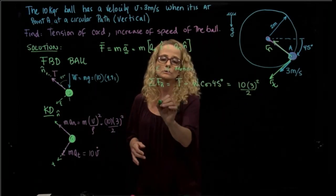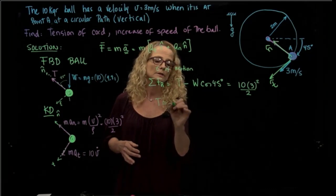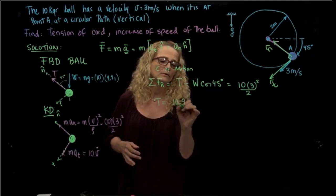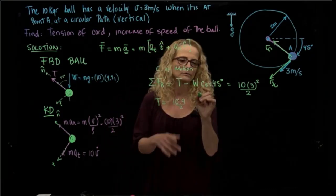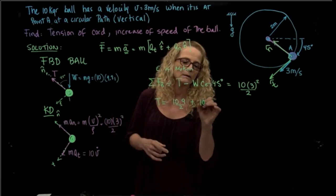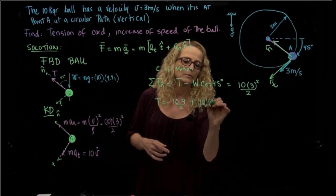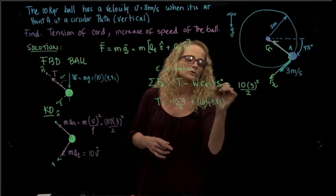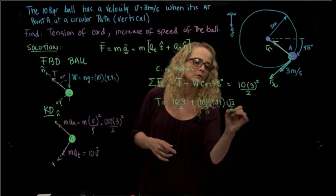So I can have that the tension is 10 times 9 over 2. Well, I could solve for that already, but I'm just writing all the numbers. And the weight is 10 times 9.81 cosine of 45. You know that's the square root of 2 over 2.